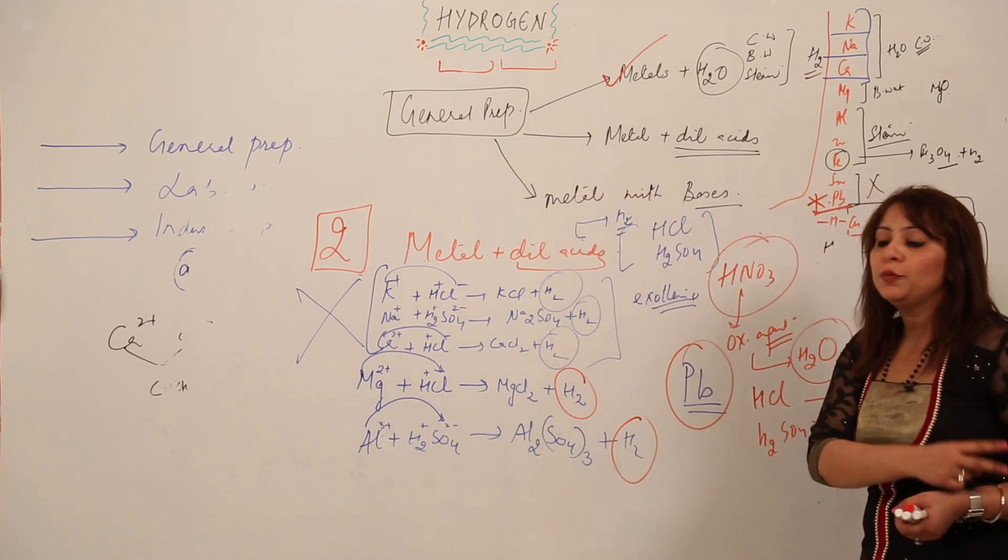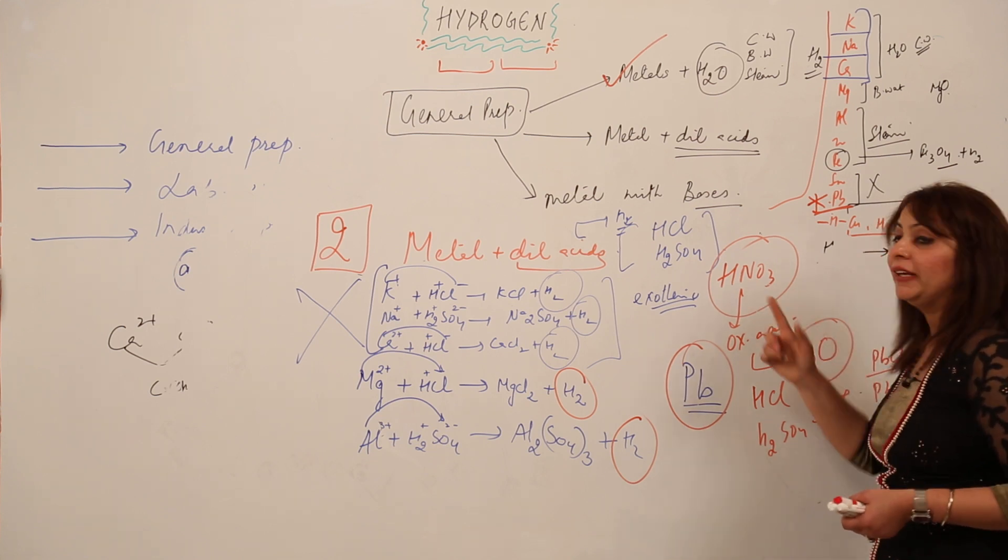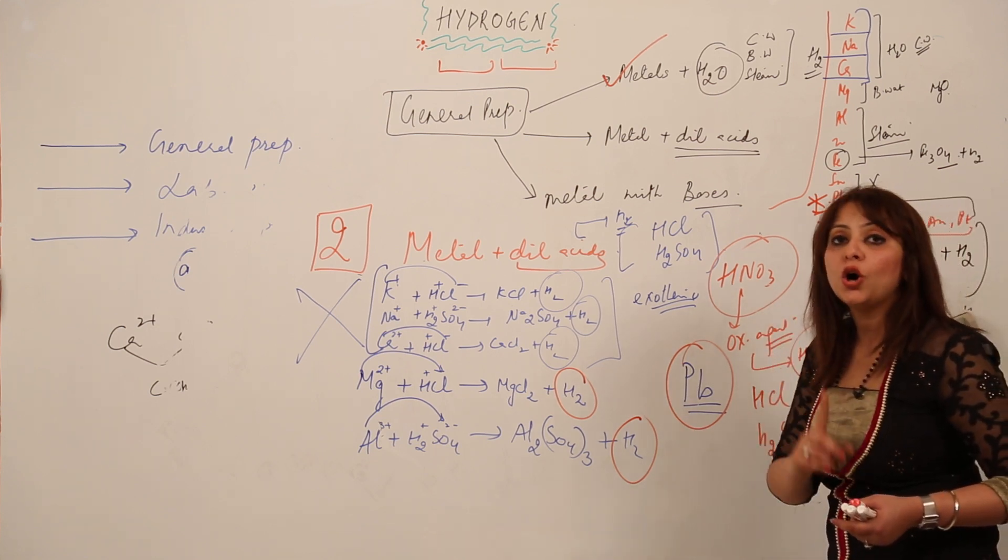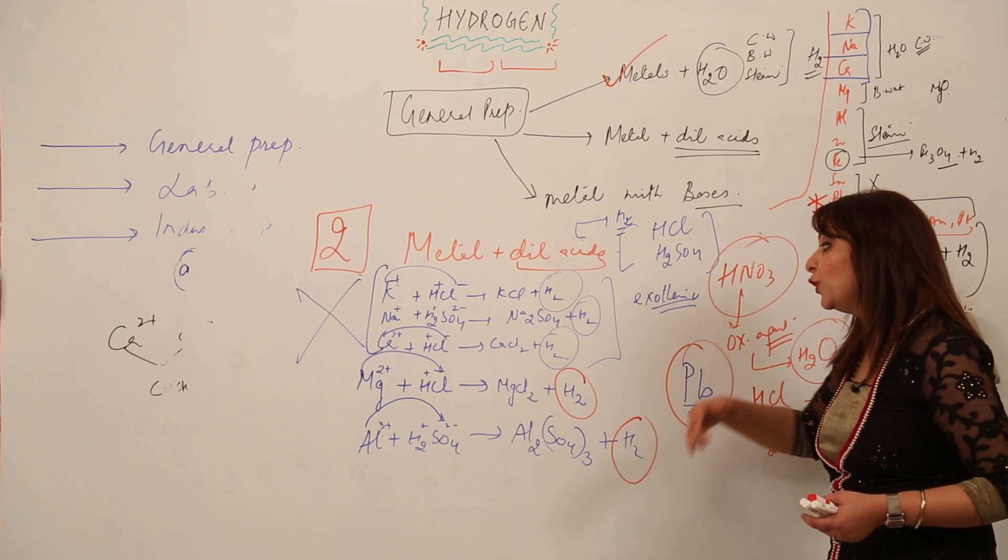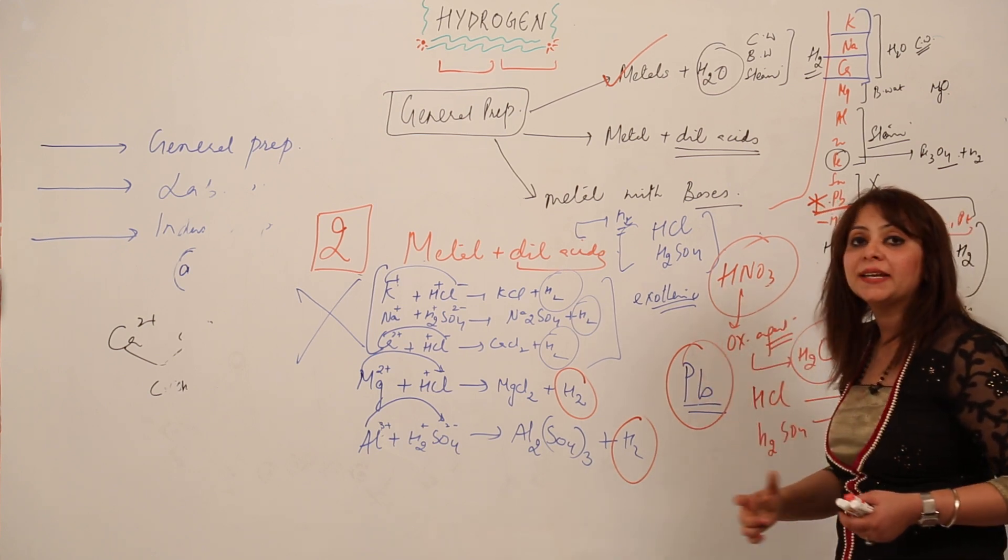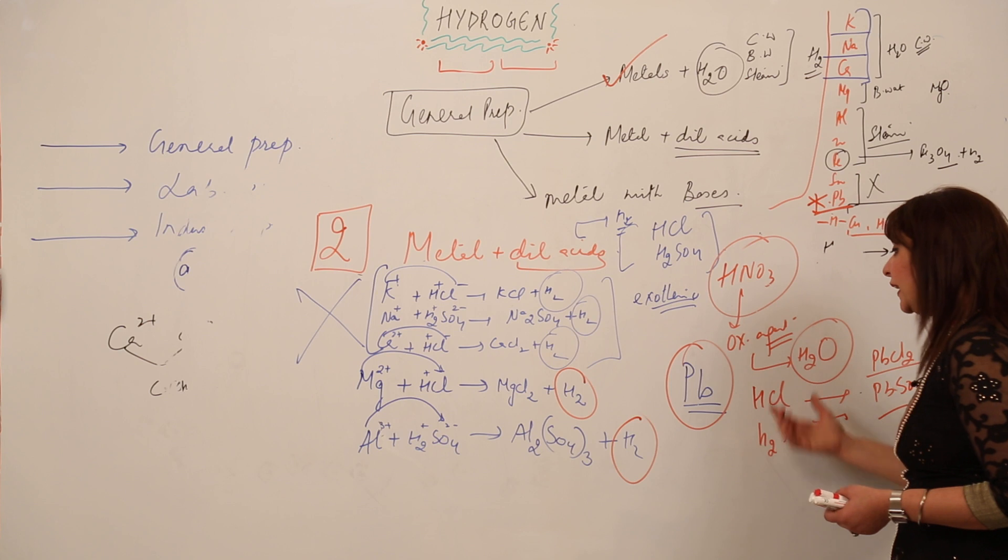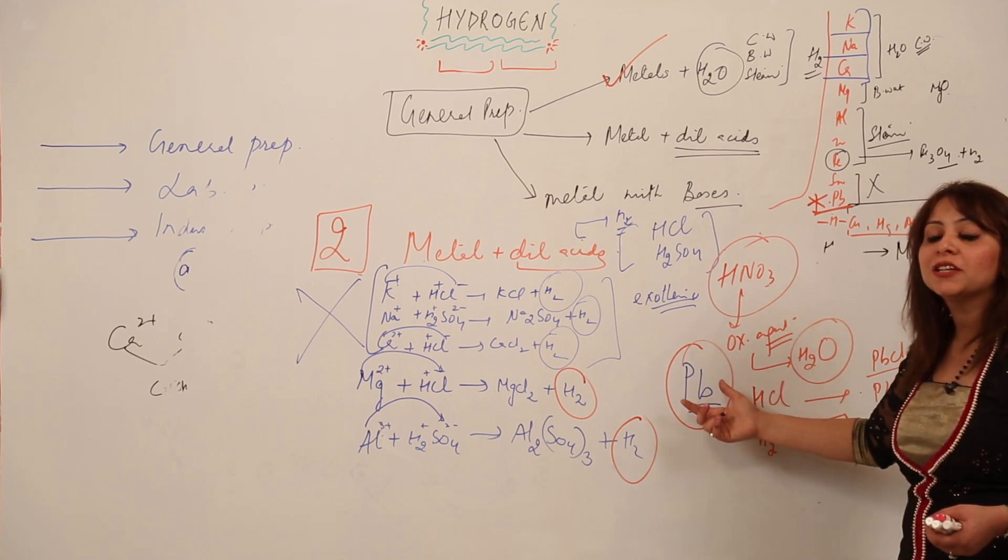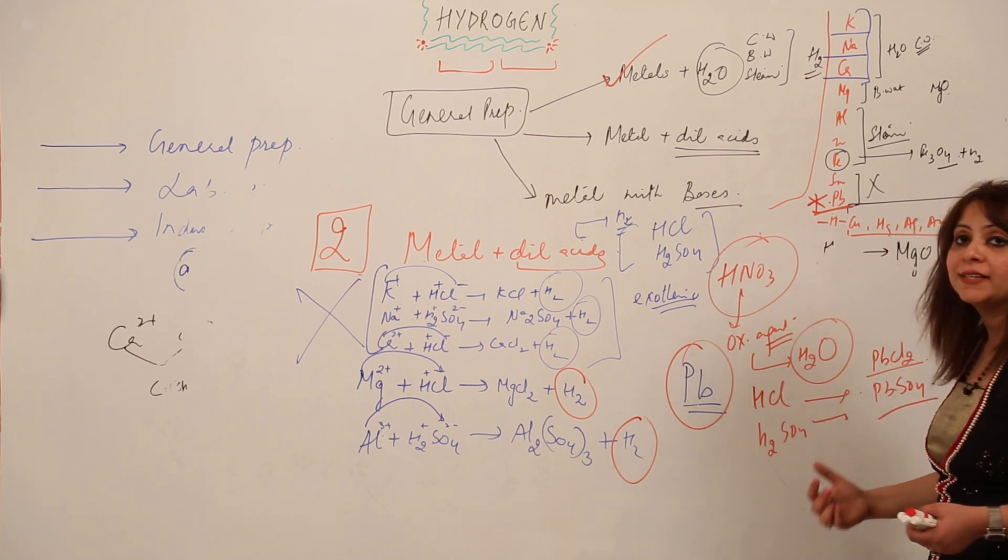Two important points to remember: HNO3 can't be used because it is a strong oxidizing agent, so instead of H2, if we use HNO3, we'll be getting H2O. Moreover, lead is not used because it forms a covering of lead chloride and lead sulfate.